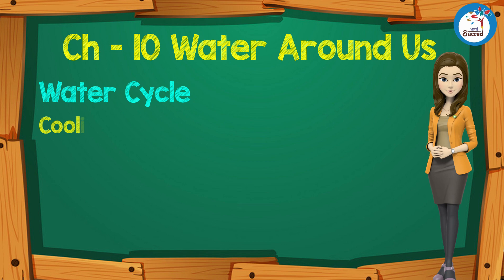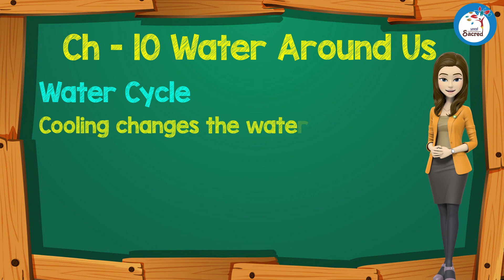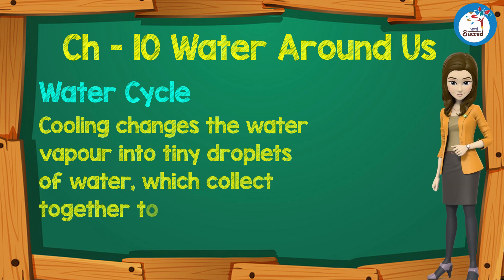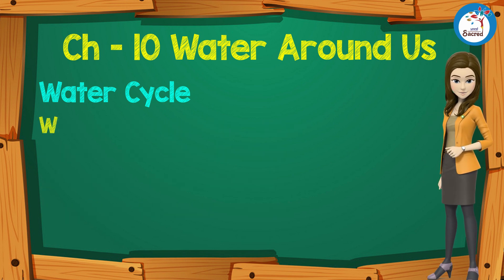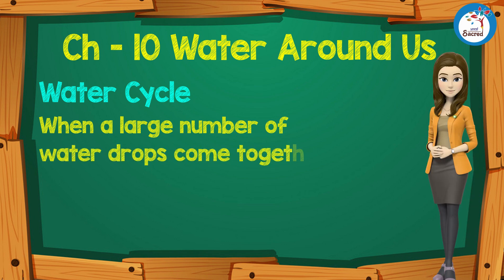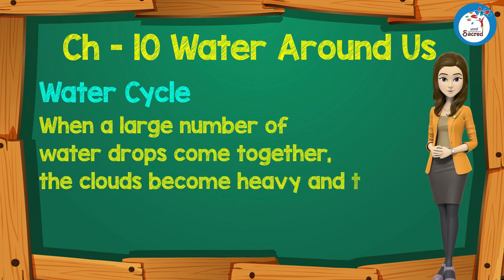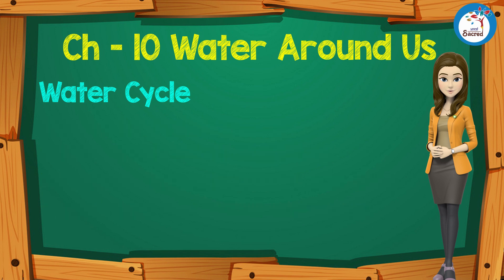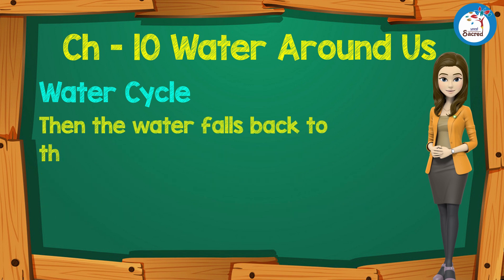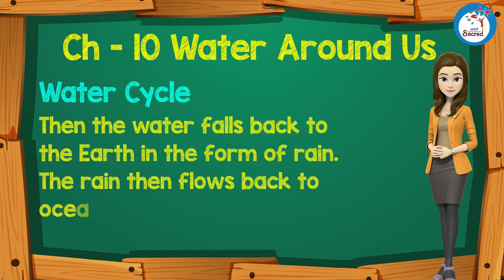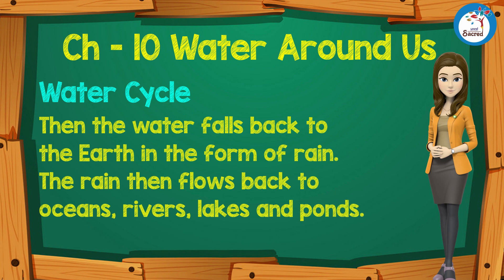Cooling changes the water vapor into tiny droplets of water, which collect together to form clouds. When a large number of water drops come together, the clouds become heavy and they cannot hold the water anymore. Then the water falls back to the earth in the form of rain. The rain then flows back to oceans, rivers, lakes, and ponds.